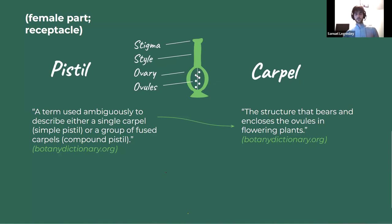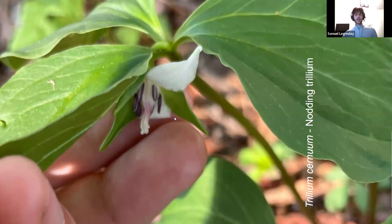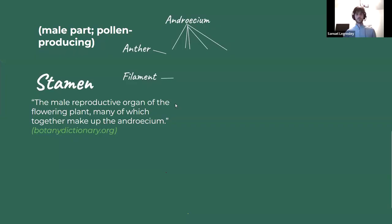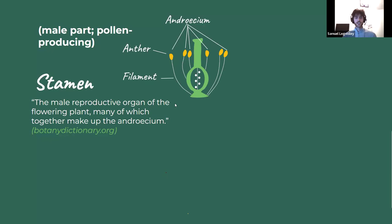Here you have the two distinctive parts of the stamen: the anther and the filament — you can see them clearly. Here is the pistil of the sheep laurel; you can see the pistil and the stamens all around it. The same with the rhodora, which is a kind of rhododendron — our native rhododendron. You can really try to understand each plant by looking at its parts and seeing how they all play together.